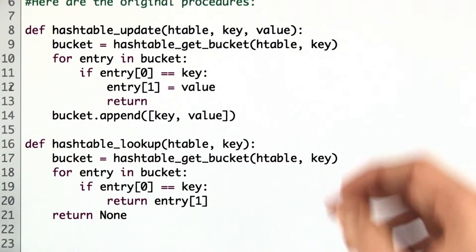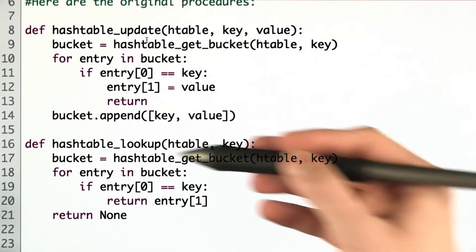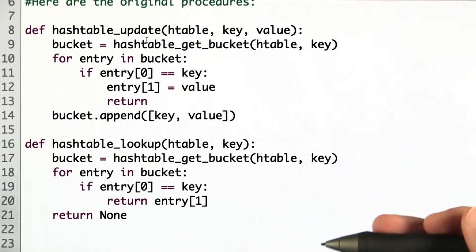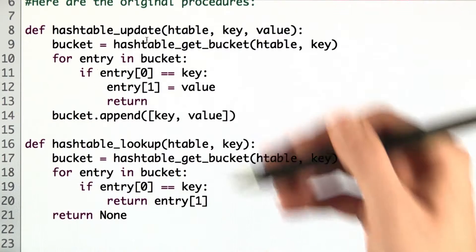In lecture, Dave pointed out that these two functions, HashtableUpdate and HashtableLookup, use some similar functionality that instead we can place in a separate procedure.